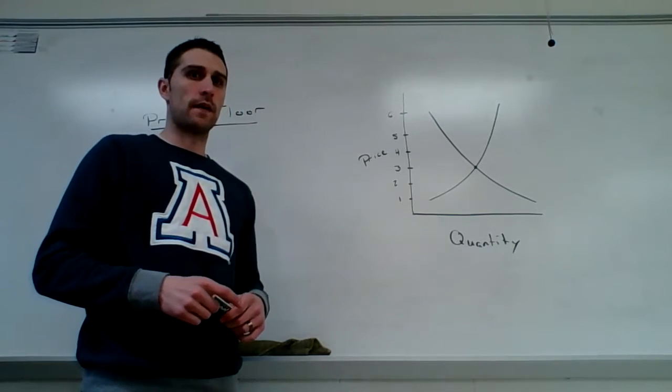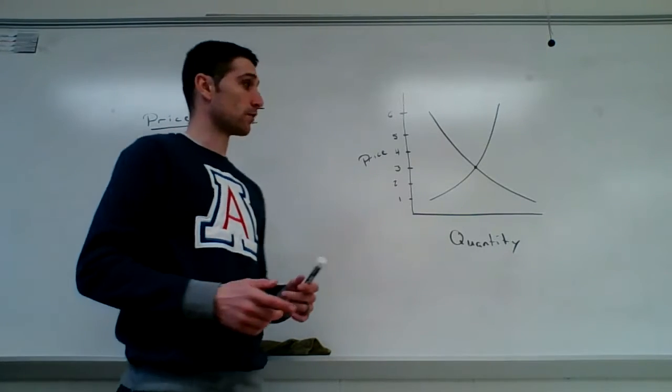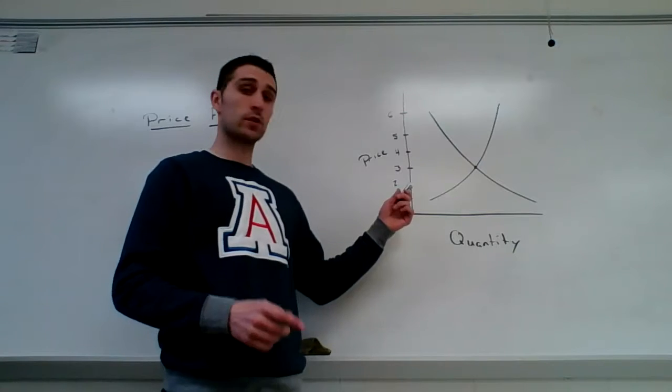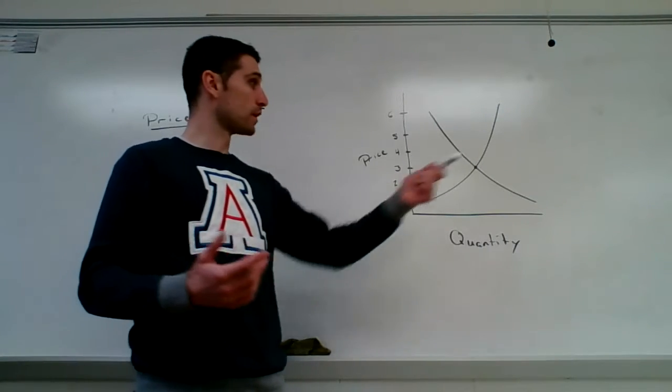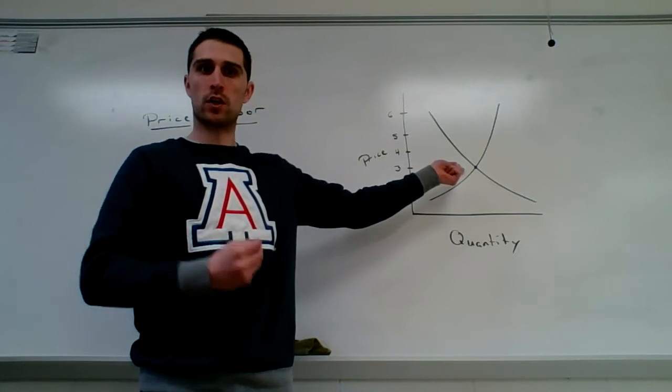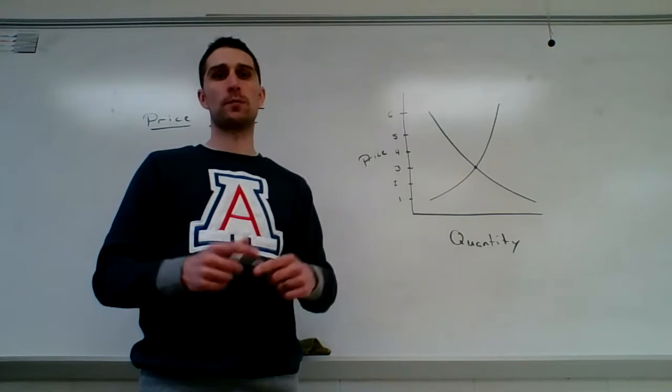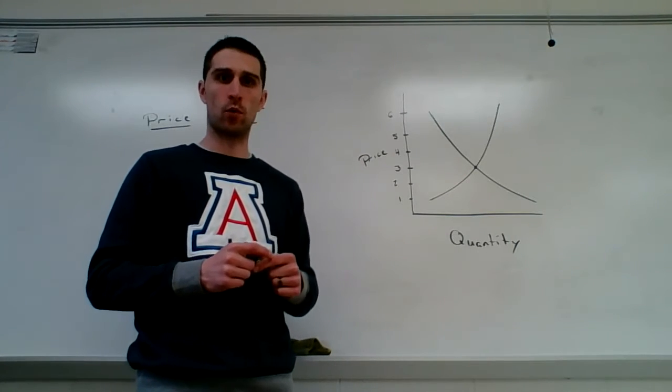A bit of review before we get started on that. You'll remember last time we covered price ceilings. Those are put in place by the government on the theory that the price equilibrium, the naturally occurring price per product, is too expensive for consumers to afford.